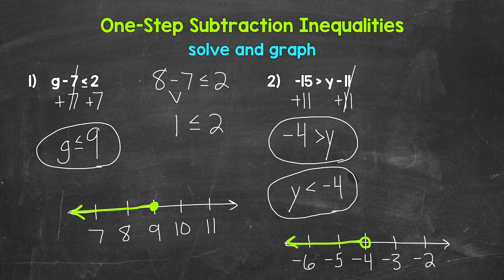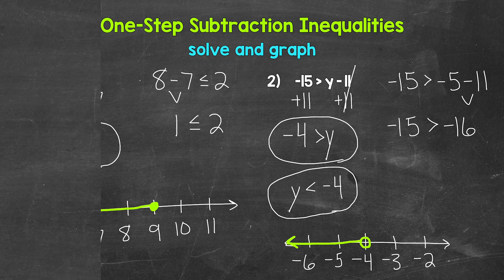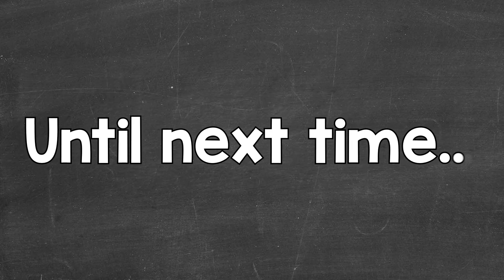Now let's check a solution by plugging it into the original inequality. We need any value less than negative four — let's use negative five. So negative fifteen is greater than negative five minus eleven. Negative five minus eleven gives us negative sixteen. Negative fifteen is greater than negative sixteen, so that works — we are correct. Y is less than negative four is our answer. So any value less than negative four is a solution. There's how to solve and graph one-step subtraction inequalities. I hope that helped — thanks so much for watching. Until next time, peace.